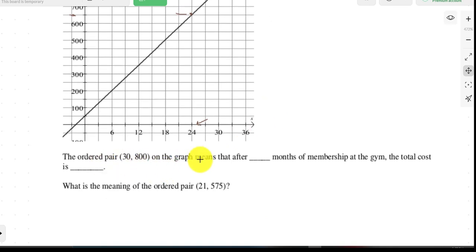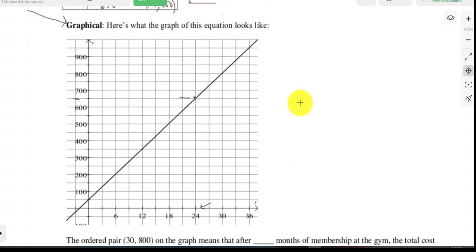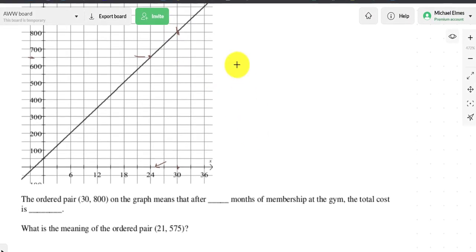And then they ask us to fill in, oh, and I forgot to mention, here's a symbolic representation. Symbolic would be the equation or the formula. We have numerical as the table, graphical as the graph, and then to finish out the video, it says the ordered pair 30 comma 800 on the graph. Here's 30 comma 800. That's this point up here. That means after 30 months of membership, the total cost was $800. That's the meaning of this point.